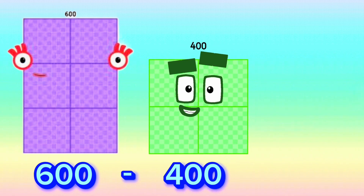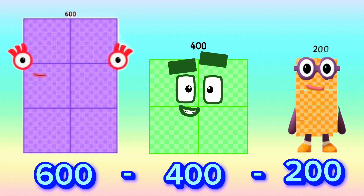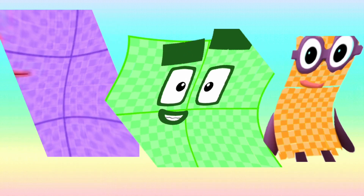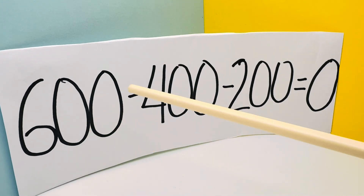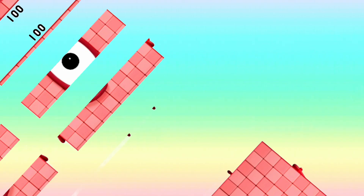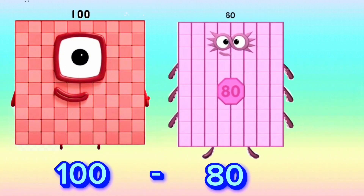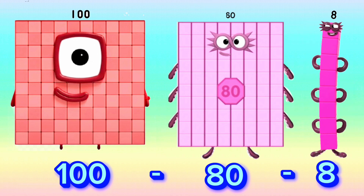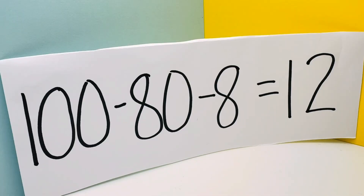600 minus 400 minus 200 is equals to 0. 100 minus 80 minus 8 is equals to 12.